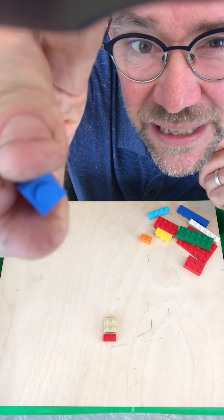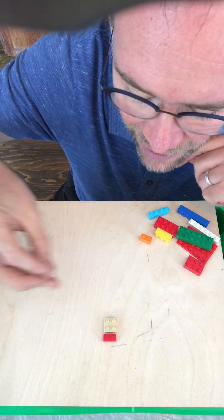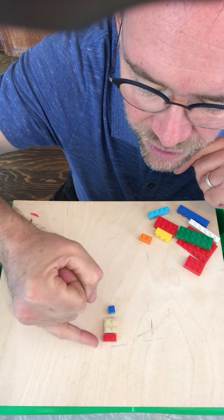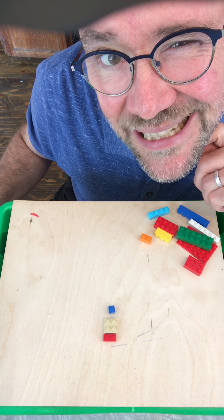If I take this piece of Lego, it has one dot on it. I'll add that to two and four. I get seven.